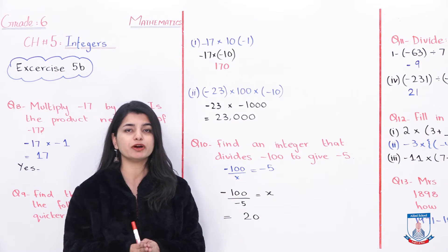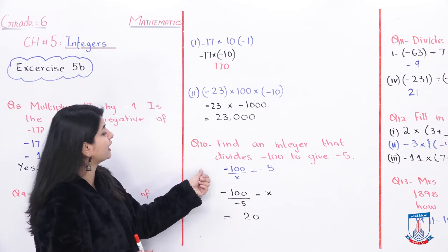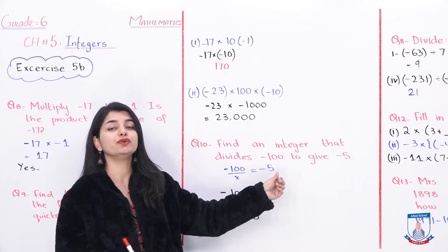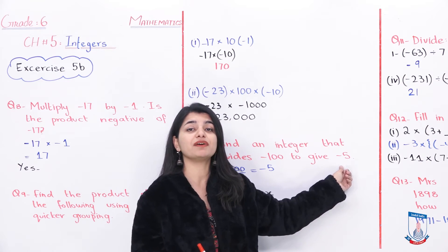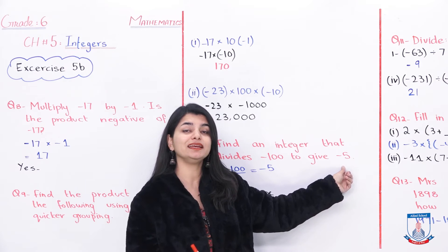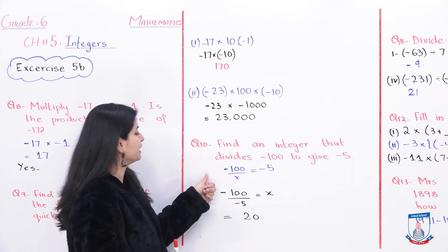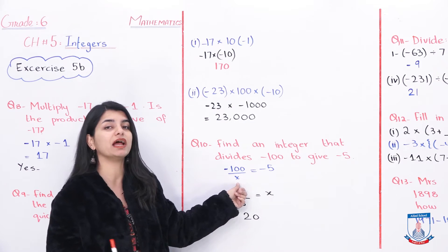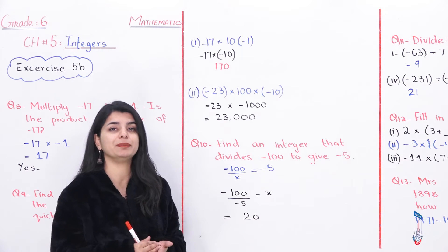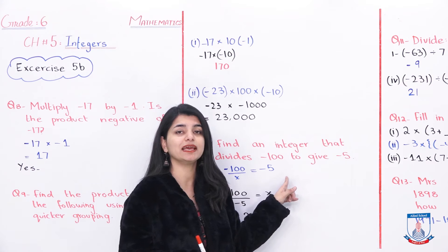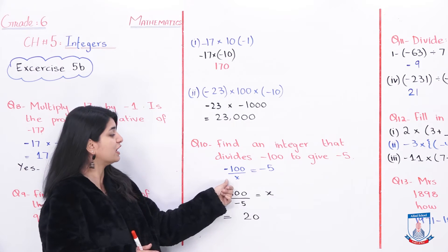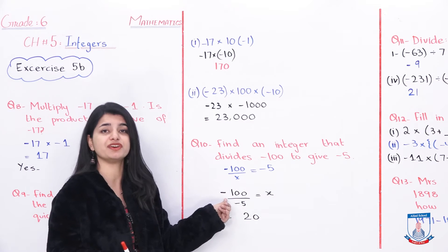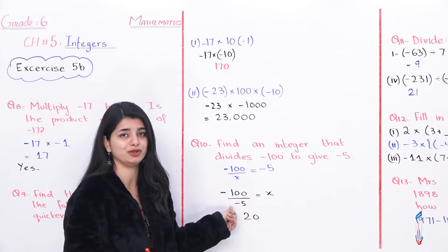I hope you completed that question. Now let's look at question number 10: Find an integer that divides minus 100 to give minus 5. You need to find which integer, when you divide negative 100 by it, gives negative 5. The way to do this is to rearrange: divide minus 100 by minus 5 to find x.